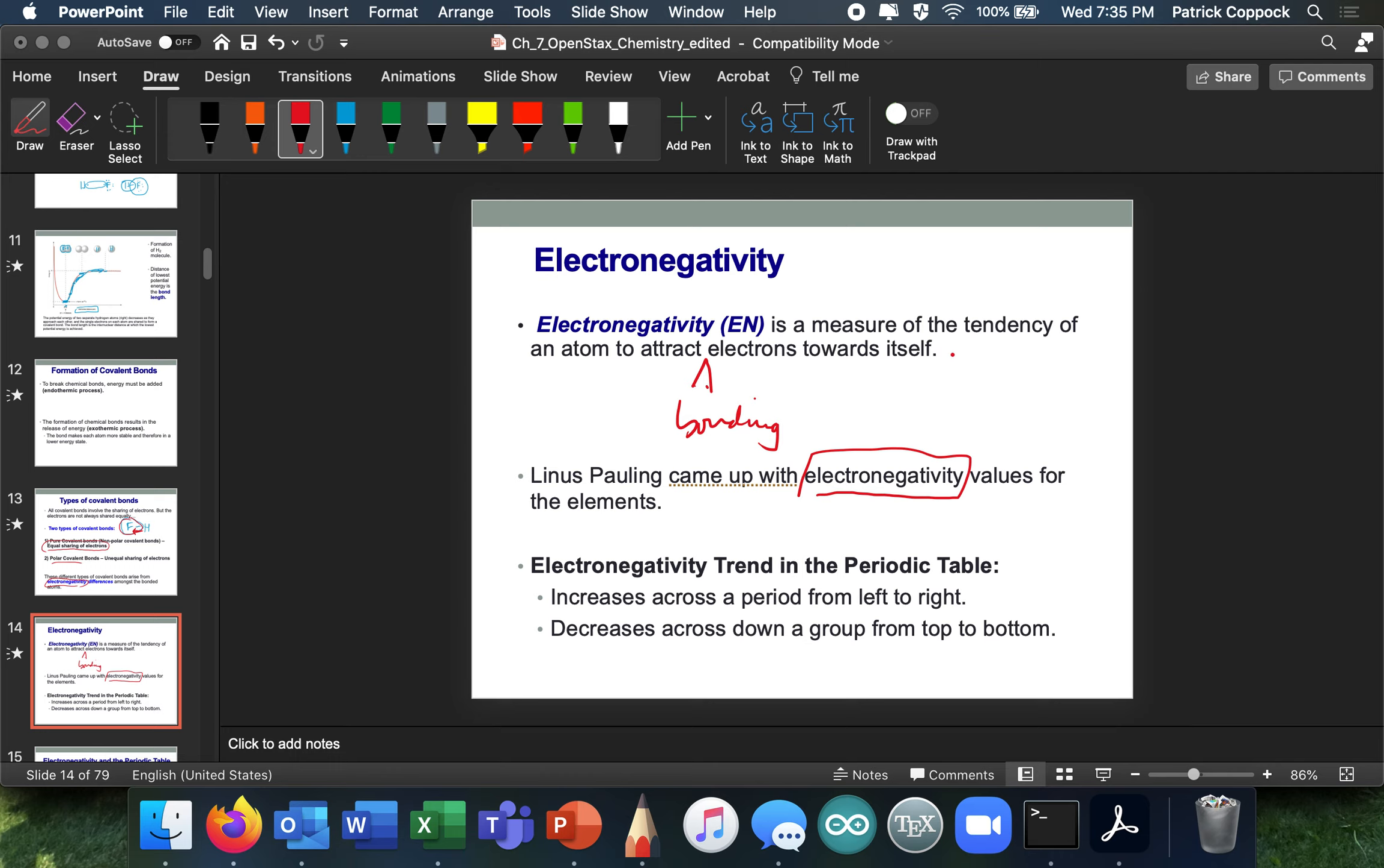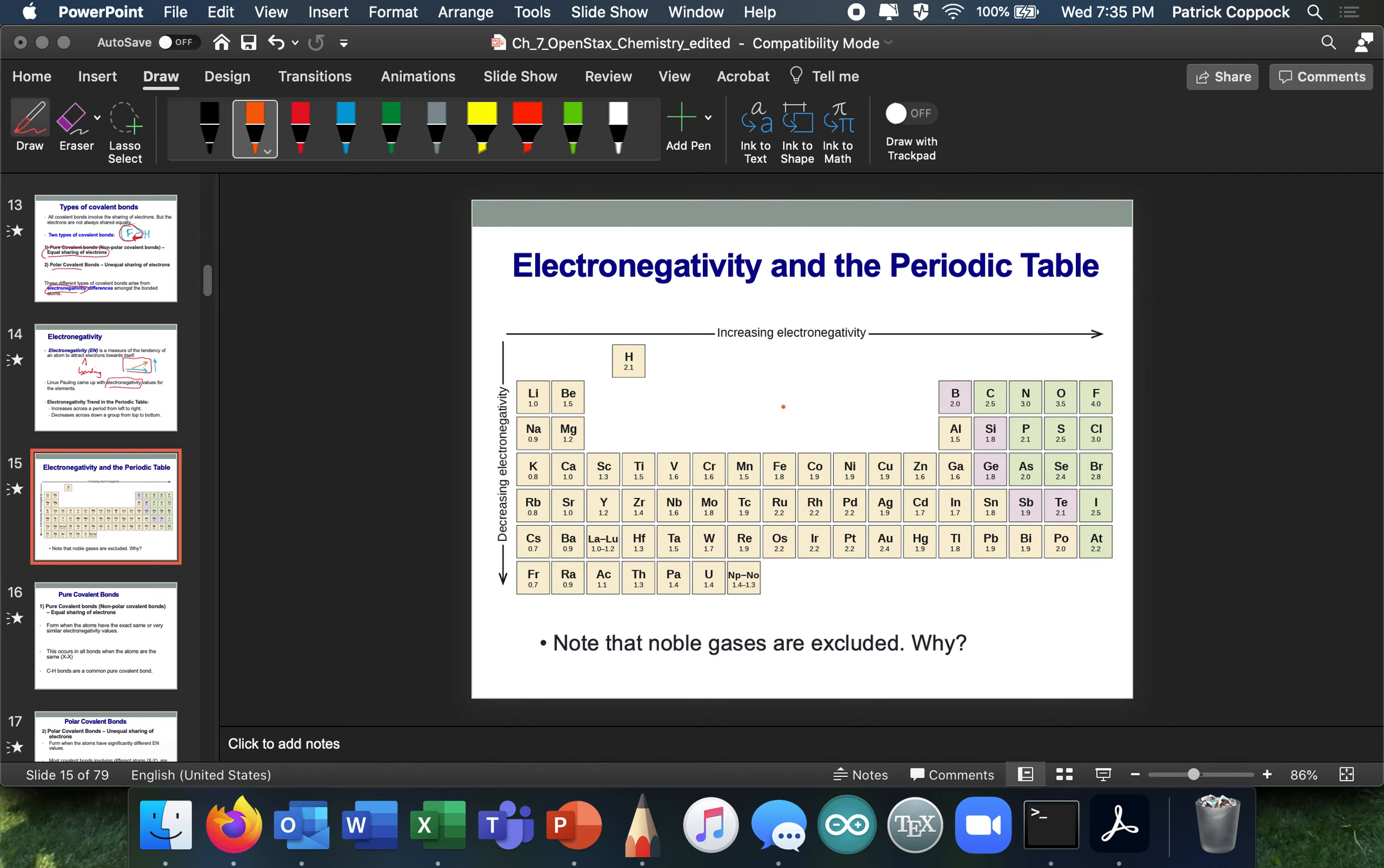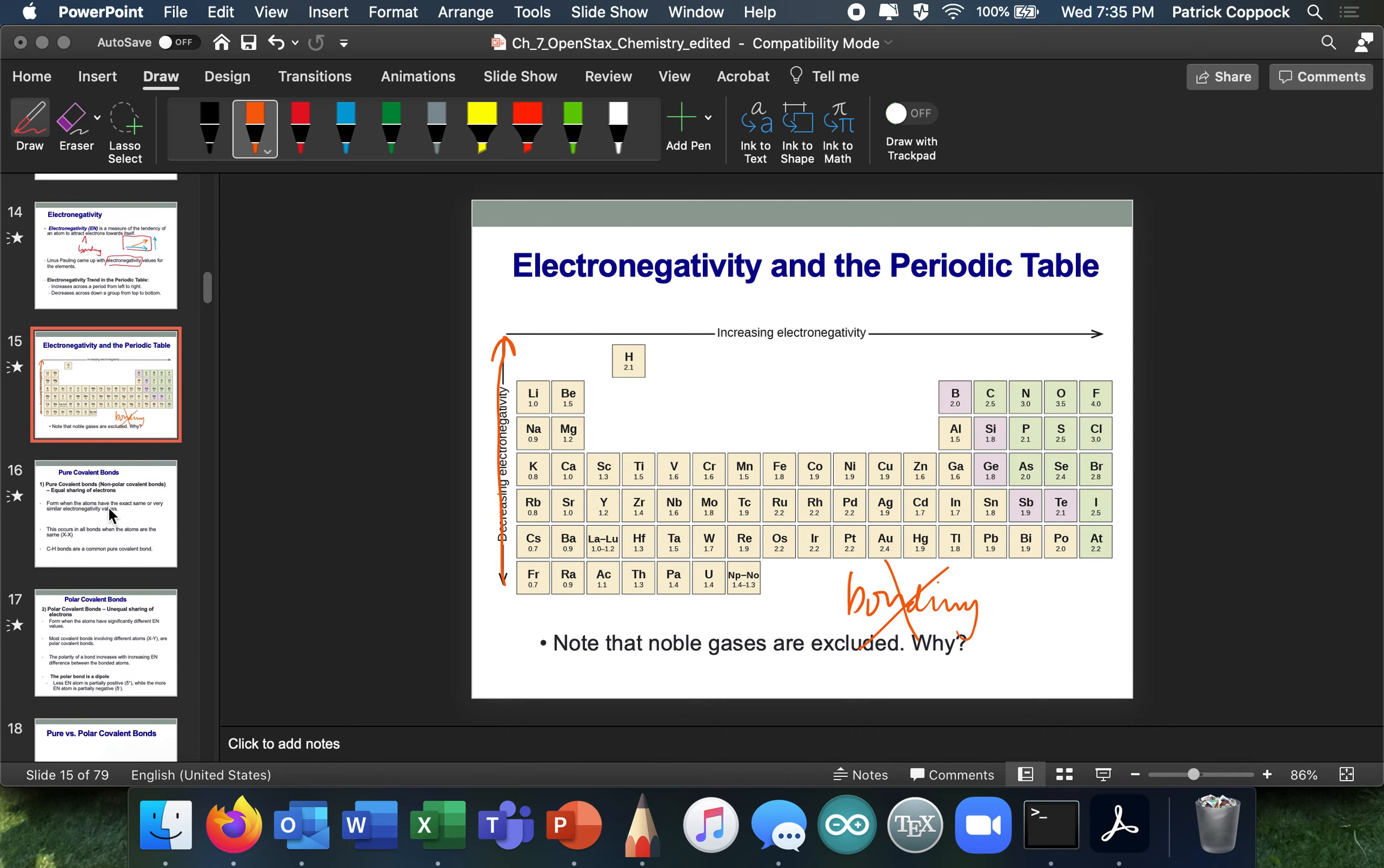The electronegativity trend goes like this. If this is a periodic table, it increases as we go up, and it increases as we go over. And sometimes people put those two together and say, as it goes up and to the right, it increases. Electronegativity increases as we go up and to the right. It says decreasing that way. Really, probably should put increasing this way. But we exclude the noble gases. Why? Because there are no bonding electrons in noble gases.